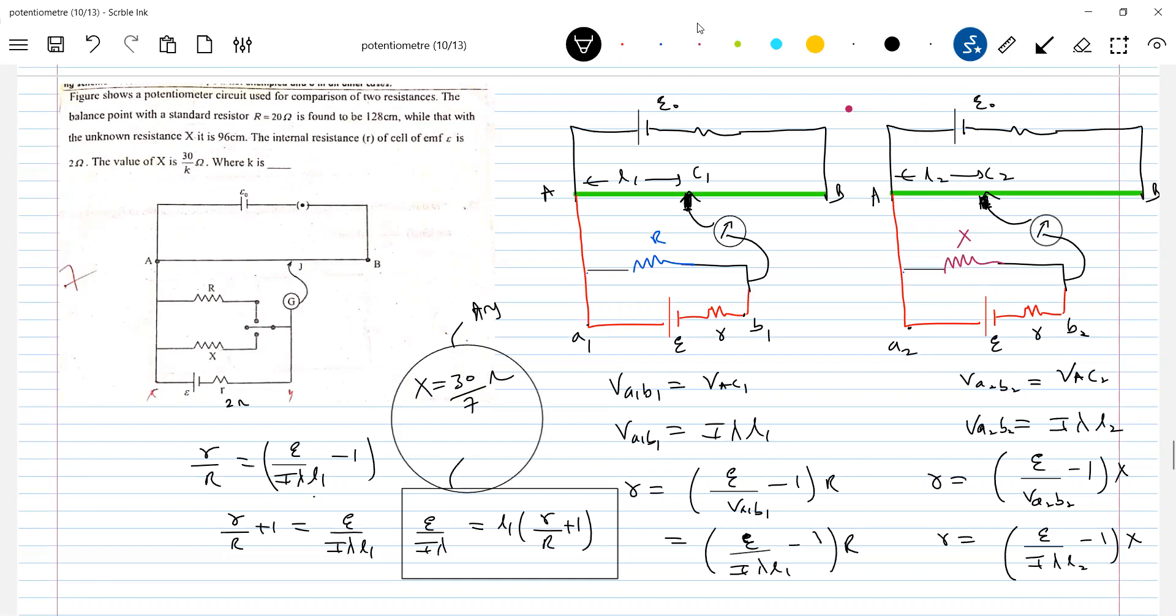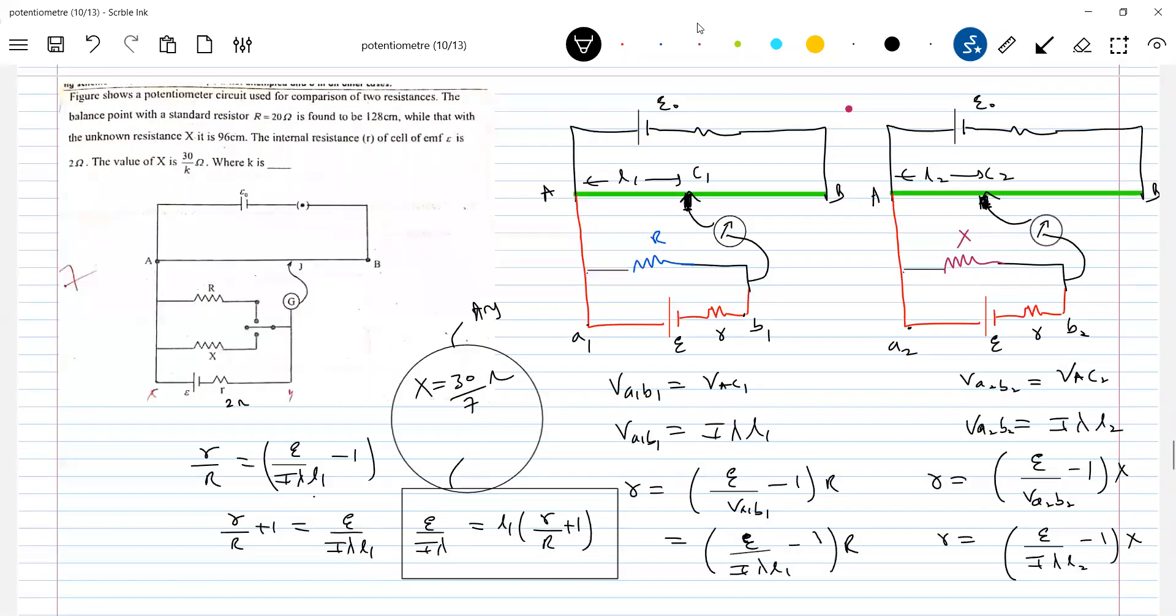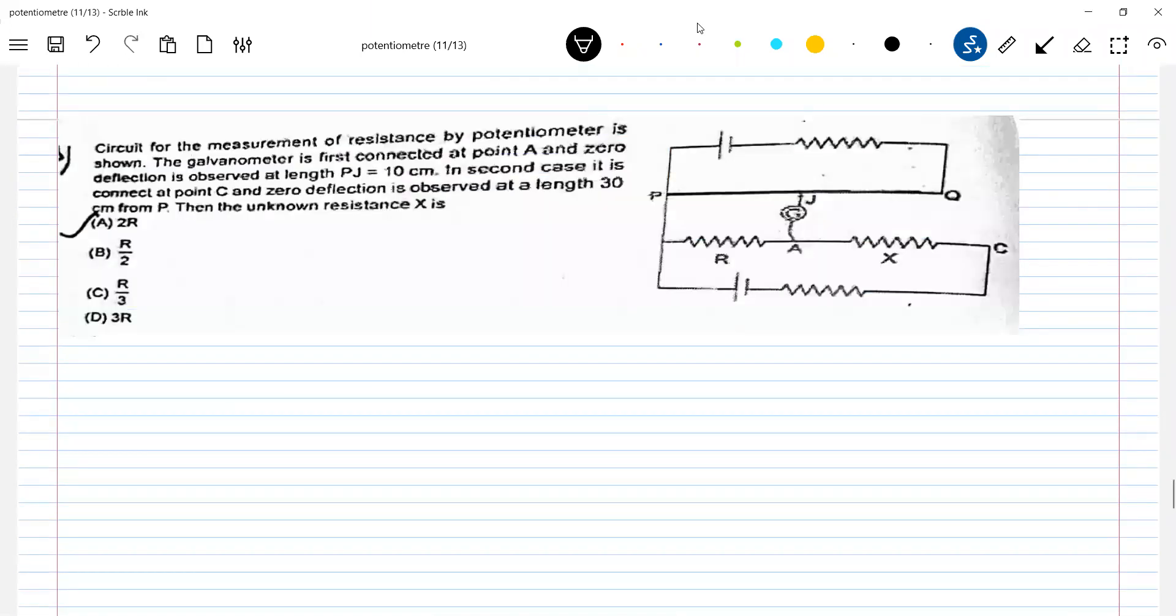Different types of circuits. These are very popular, not just in textbooks, but possibility of asking in advanced problems. Finding the resistance of a resistor using potentiometer. This is another circuit you see. Earlier we brought them parallel, something new here.